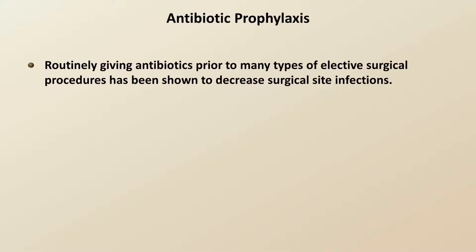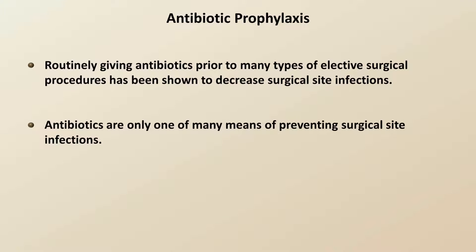I'll now switch topics to discuss antibiotic prophylaxis. Routinely giving antibiotics prior to many types of elective surgical procedures has been shown to decrease surgical site infections. Antibiotics are only one of many means of preventing surgical site infections. Other essential practices include preoperative skin cleansing with chlorhexidine or iodine, use of barrier devices by staff in the OR such as masks, caps, gowns, and shoe covers, surgical hand hygiene, and good general surgical technique.